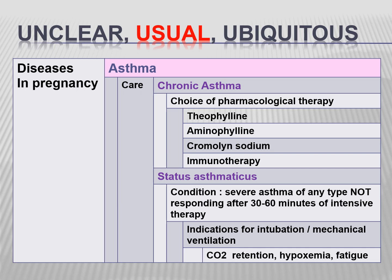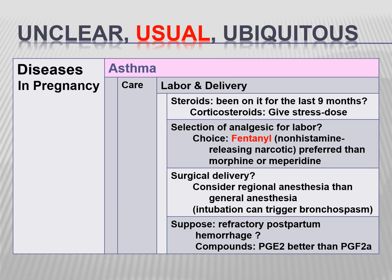Status asthmaticus is severe asthma of any type not responding after 30 to 60 minutes of intensive therapy. Intubation and mechanical ventilation are required if there is CO2 retention, hypoxemia, and respiratory fatigue. For labor and delivery, give stress-dose steroids. Fentanyl is the ideal analgesic for labor as it is non-histamine releasing, preferred over morphine or meperidine. Regional anesthesia is preferred over general anesthesia, assisted vaginal delivery should be performed as much as possible, and postpartum hemorrhage must be anticipated.